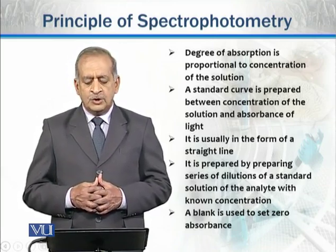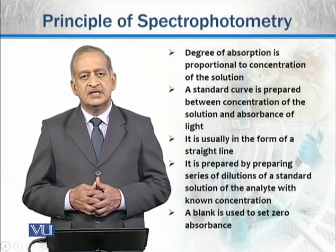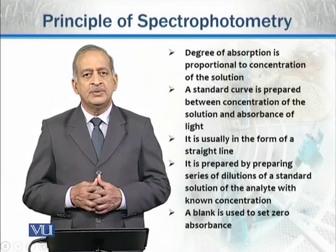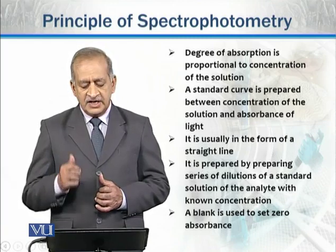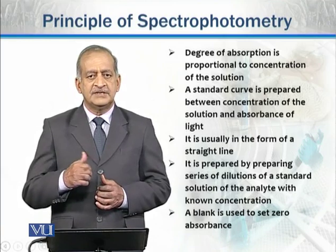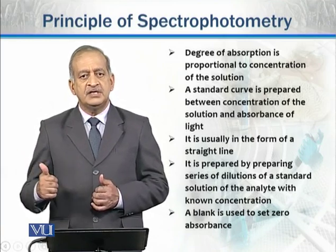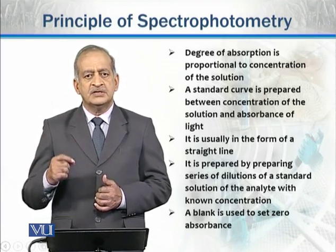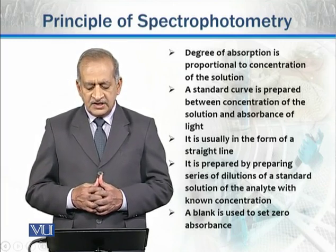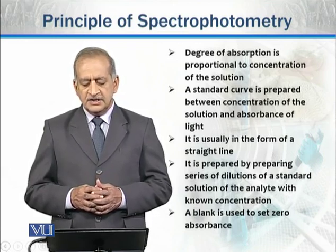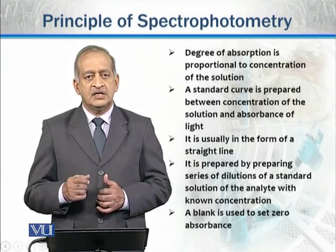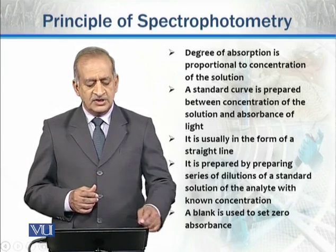The degree of light absorption is also dependent on path length — the length that light must travel through the solution. If path length remains the same, absorbance is directly proportional to concentration. A standard curve is normally prepared between the concentration of the solution and the absorbance of light, by making different dilutions of a standard solution of the analyte with known concentration. A blank is used to set zero absorbance as a reference.